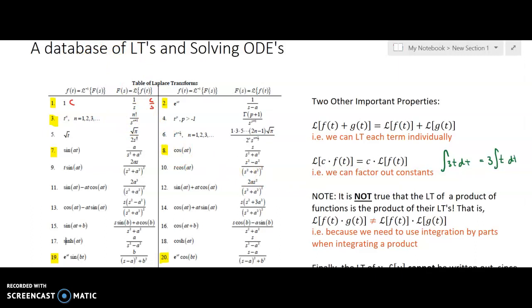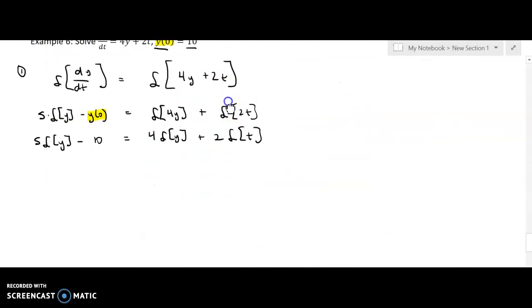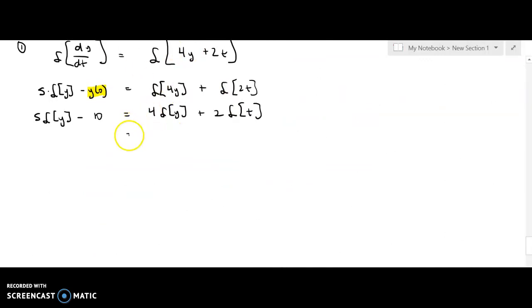So that means that if I do t to the 1st, t to the 1st is going to come out to, come back down here real quick, this is going to be 4 times the Laplace of y plus 2 times, let's see, so this is n is 1 in this case. So this is going to be 1 factorial over s to the n plus 1. And so when I copy that all down, I get s Laplace of y minus 10 equals 4 Laplace of y plus 2. Now 1 factorial, that's just 1 times 1, which is 1. So I'll have 2 times 1 is 2. s to the 1 plus 1 is s squared. So that's the end of step 1.